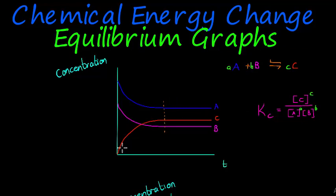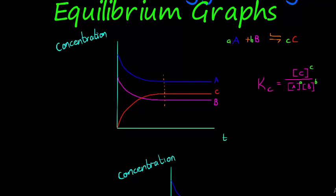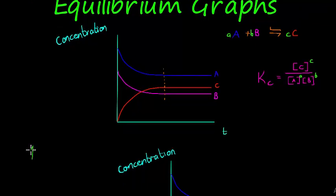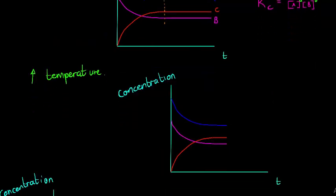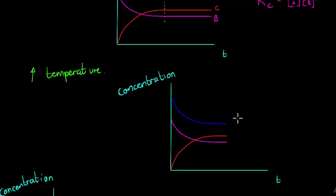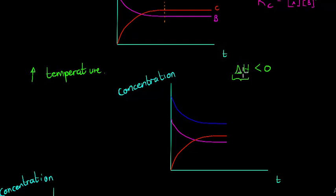Now let's look at what an increase in temperature does to this reaction and the equilibrium graph. It depends on whether we have an endothermic or exothermic reaction. Let's start with enthalpy less than zero — a negative enthalpy means energy is being released to the surroundings, so it is an exothermic reaction.